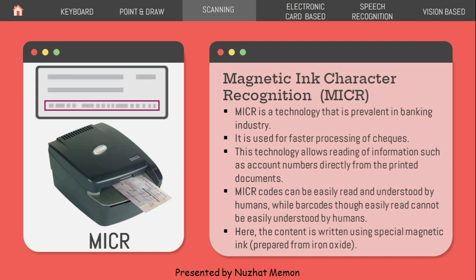MICR stands for magnetic ink character recognition. In checks, codes are made up of special magnetic ink — that is iron oxide (FeO). The MICR machine recognizes this ink and is mostly used in banks. MICR is a technology prevalent in the banking industry for faster processing of checks. It reads information such as account numbers directly from printed documents. MICR codes are easy to read and understand by humans, while barcodes, though easily machine-read, cannot be easily understood by humans.